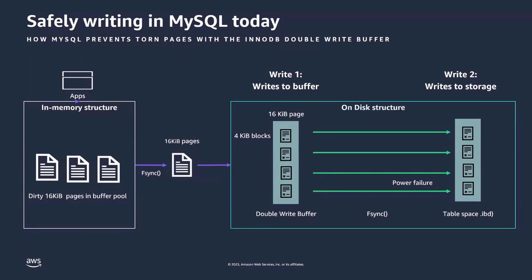When writing to a database, developers or DBAs will expect their database to protect their data. For MySQL users, they can trust that their data is safely being written to the database because it writes that information twice. MySQL incrementally writes 16-kilobyte pages to the storage in 4 KB chunks. However, in case of a system failure, some of these chunks may not make it to the storage, which can cause data corruption. To protect against this, MySQL users can use a built-in storage engine feature called the Double Write Buffer. In the event of a power outage or other failure, users can still access an intact copy of their data from this buffer, even if the data written to storage got corrupted.